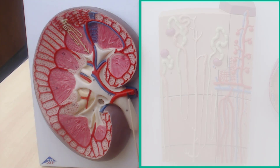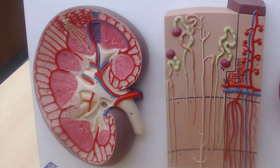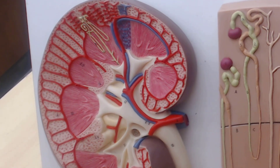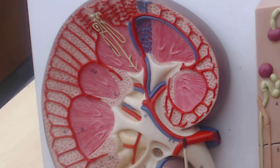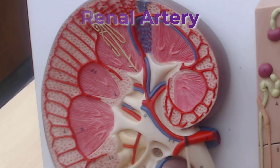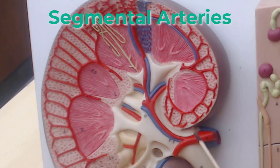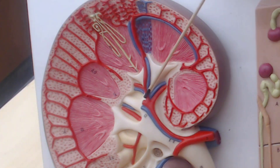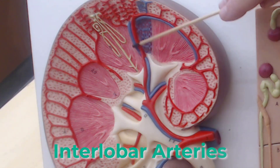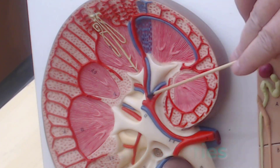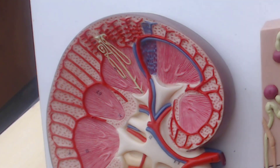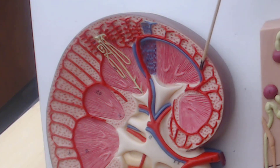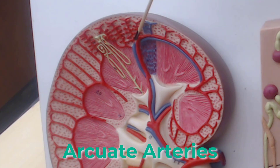Let's look at how blood flows in the kidney. Oxygenated blood from the heart exits through the aorta, going through the ascending aorta, the aortic arch, and then down to the thoracic aorta. The thoracic aorta branches off to form the renal artery. The renal artery splits to form the segmental arteries, which bifurcate again to form the interlobar artery. It's called interlobar because one pyramid along with its cortex is considered a lobe.